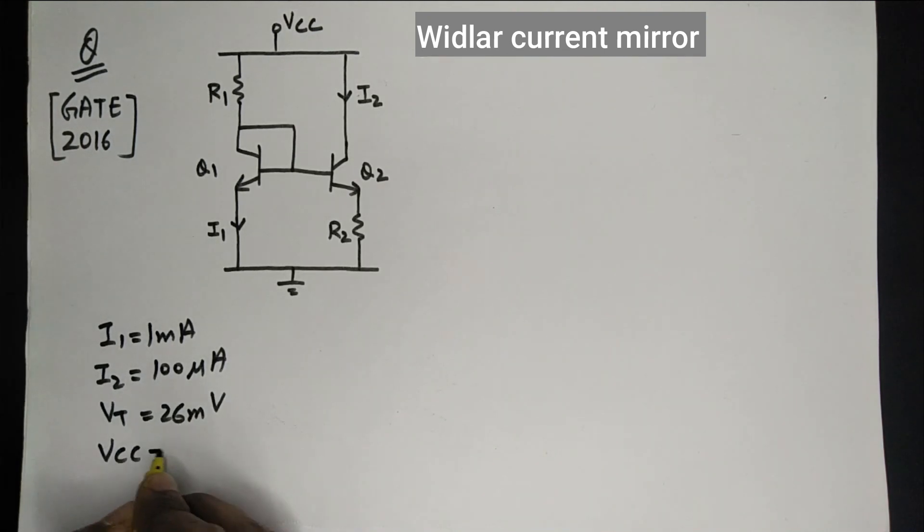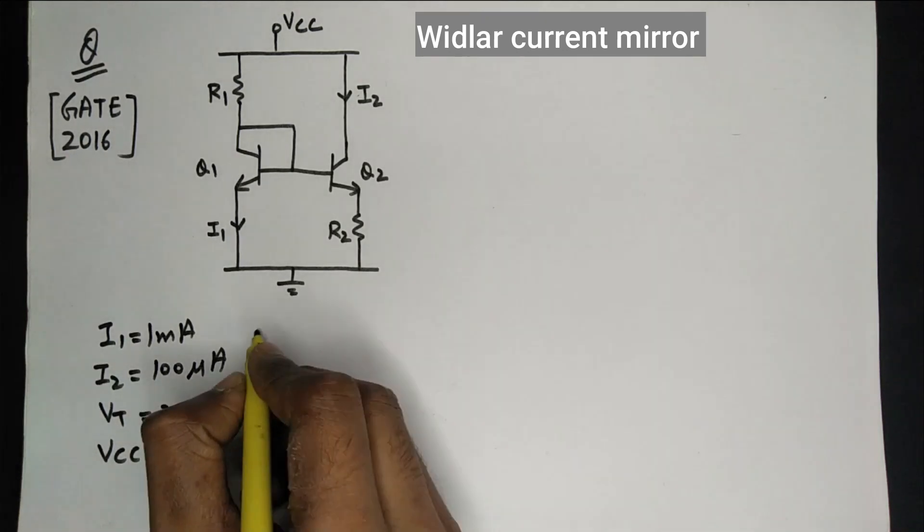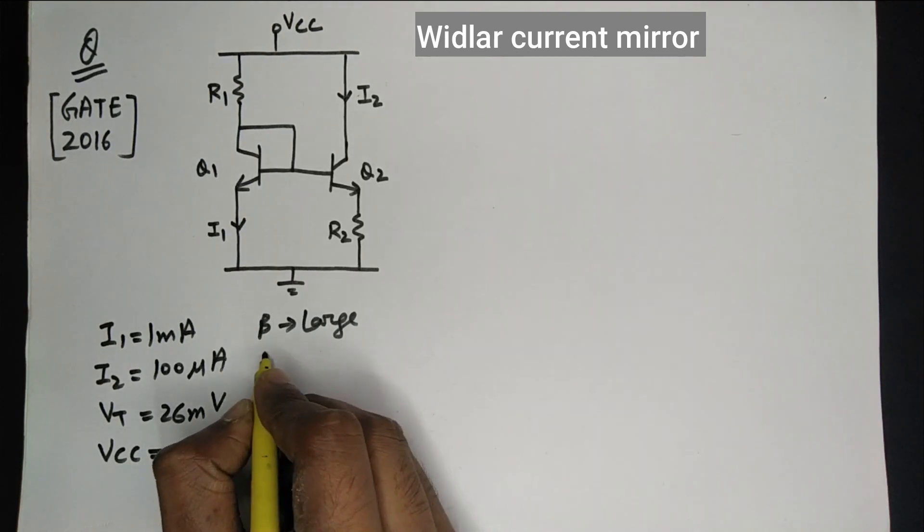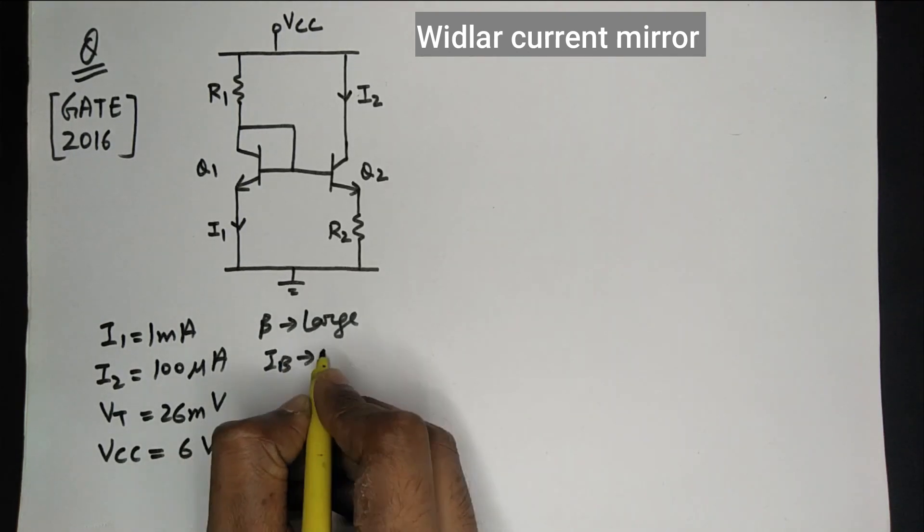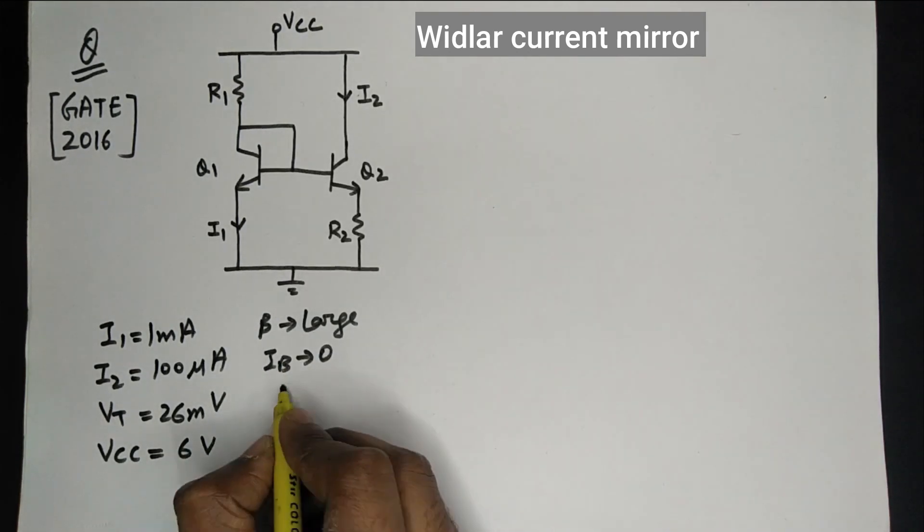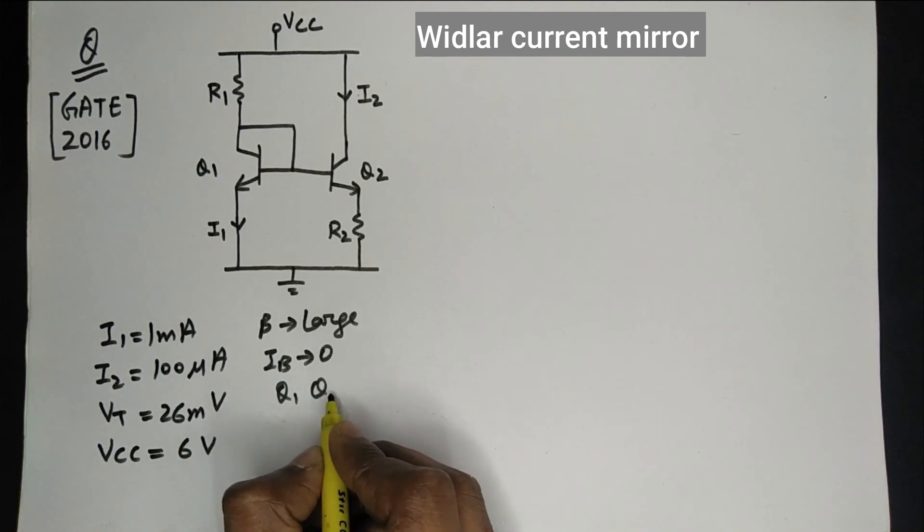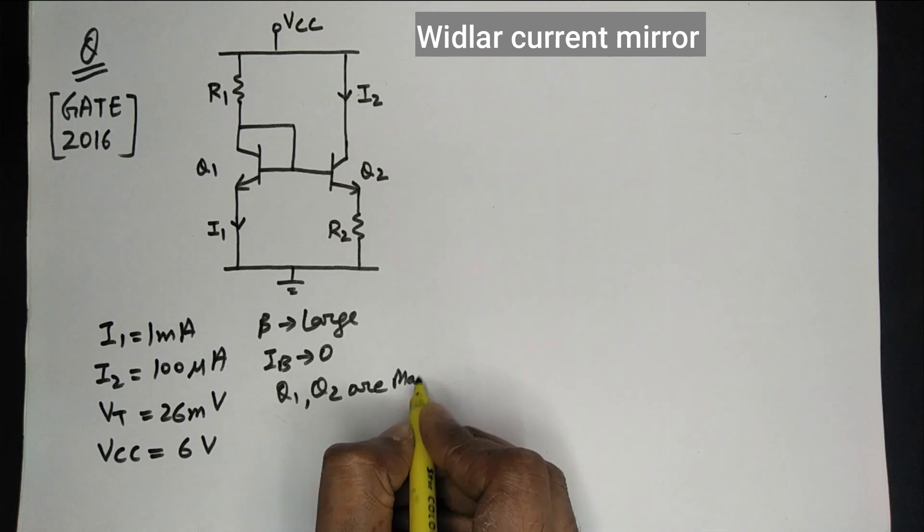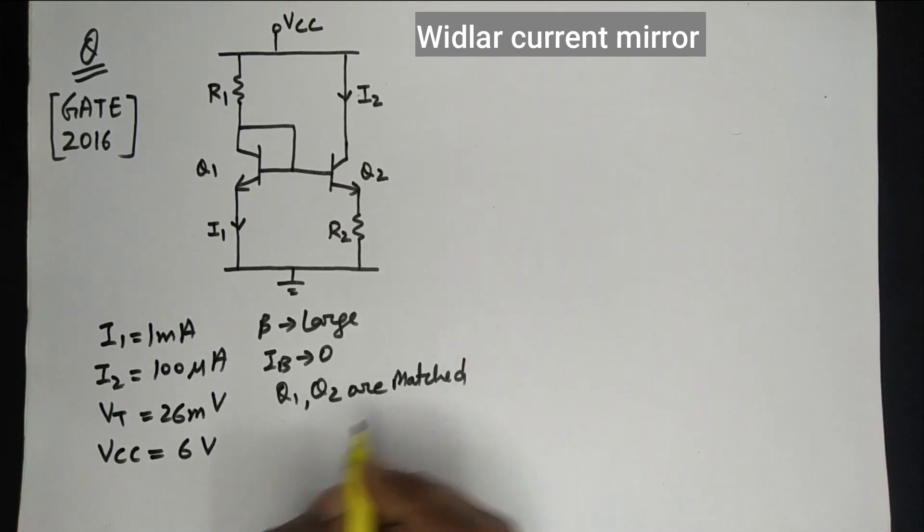And supply voltage Vcc is 6 volts. Beta is large, therefore IB is negligible, and Q1 and Q2 are matched. Therefore, their IS, beta, and emitter area values are same.